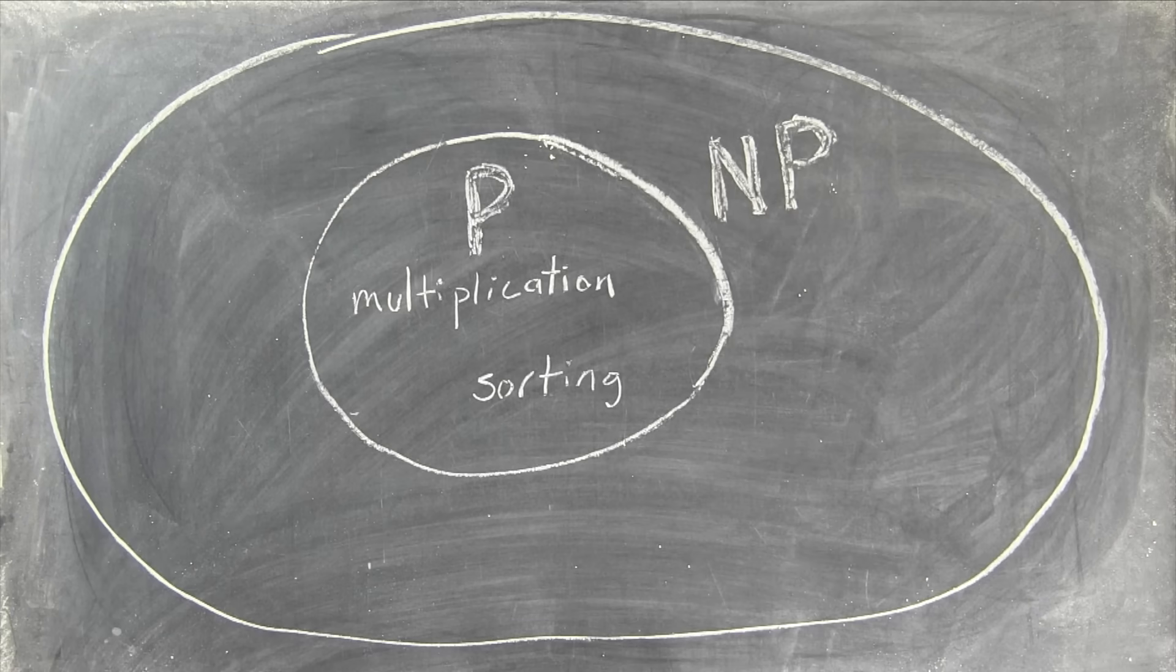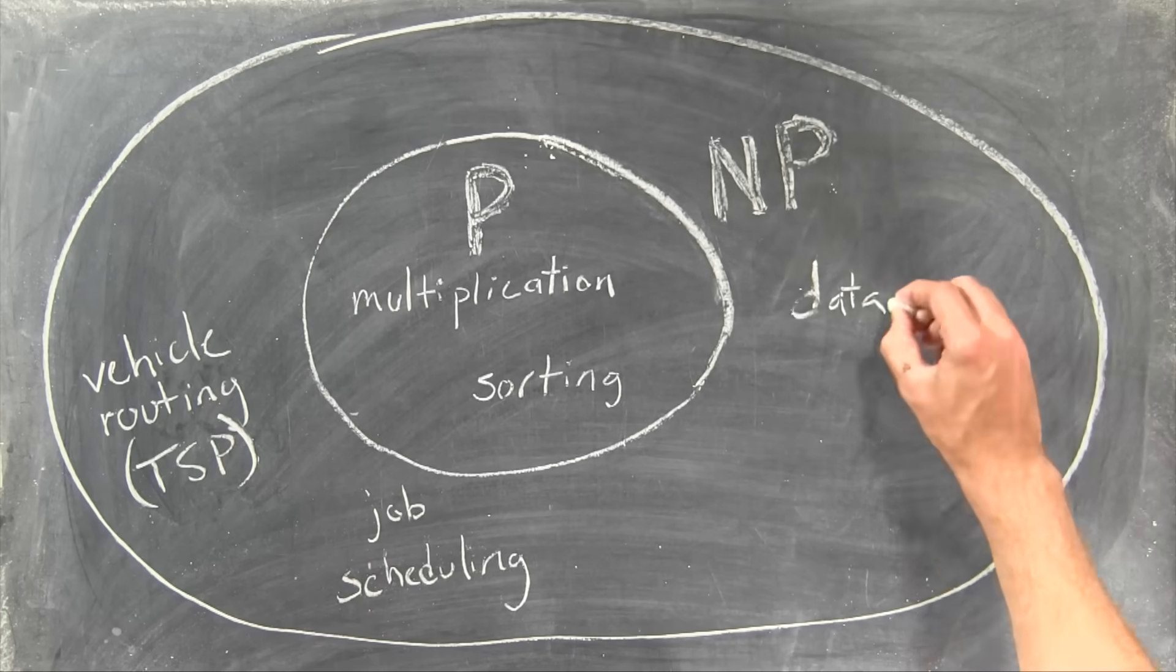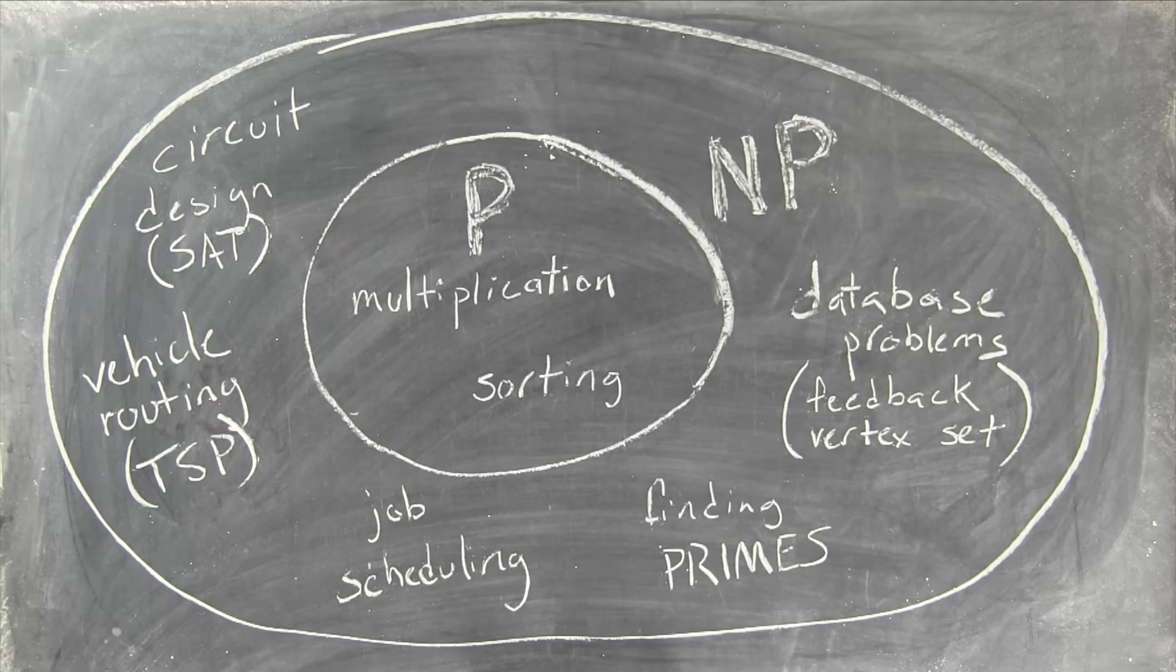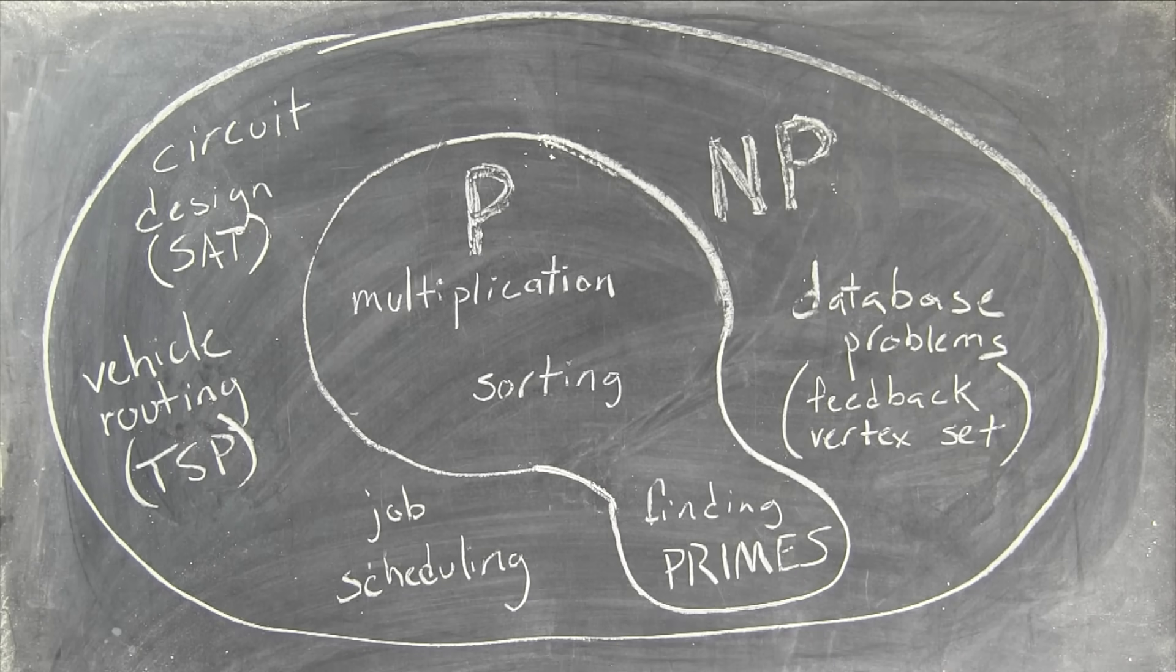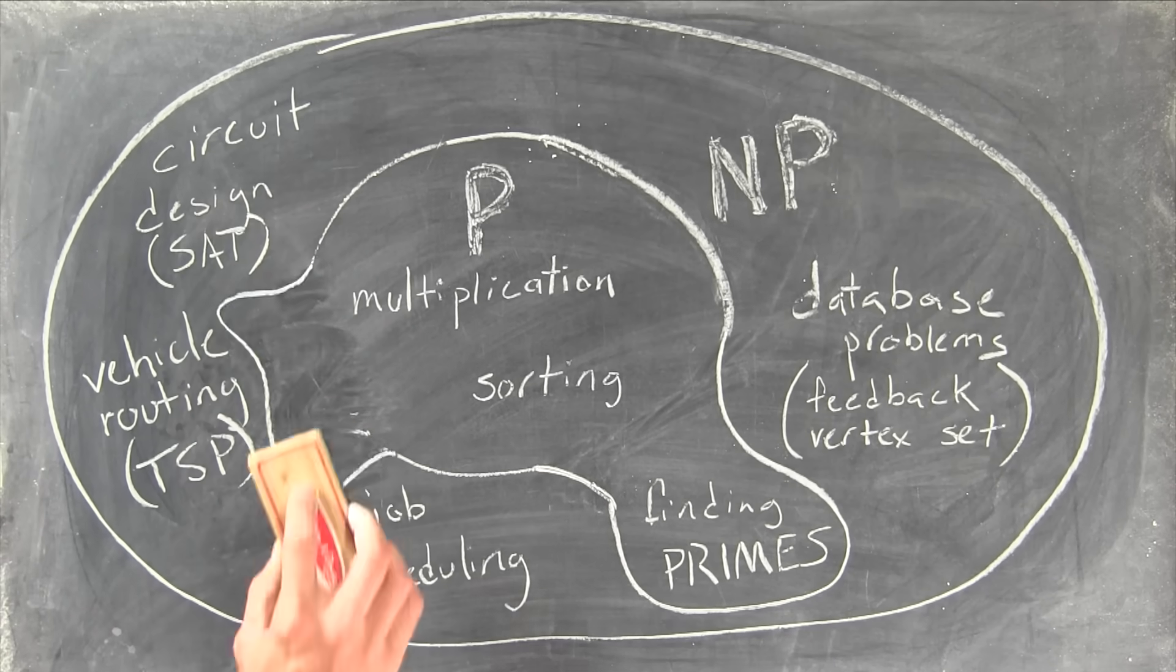That's all the problems where, if you're given a correct solution, you can at least check it in a reasonable amount of time. NP was totally maddening, because it contained lots of important problems, like vehicle routing and scheduling and problems in circuit design and databases. And often we'd get lucky and find that an NP problem was actually a part of P, and we'd have our fast program. But for a lot of them, that didn't seem to be happening.